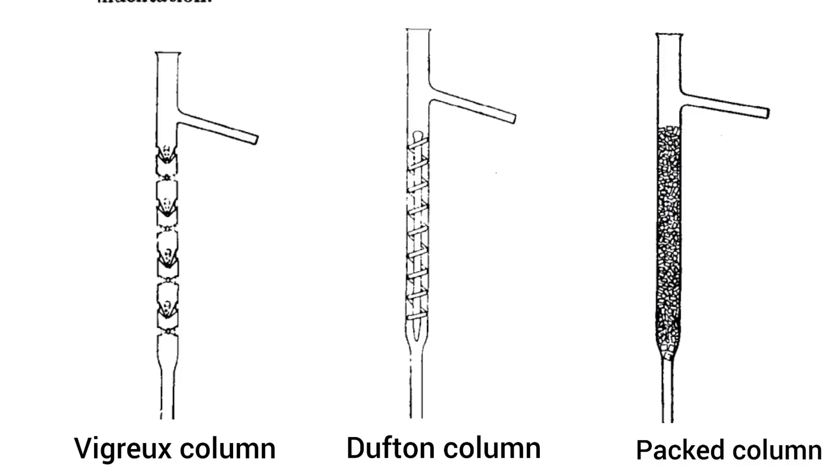Now these are three common types of fractionating columns. The one on the left is the Vigreux column which is least efficient among the three. The middle one is the Dufton column. It is designed in a way that the vapour has to travel through the spiral to reach the top, thus increasing the surface area of contact of vapour with refluxing liquid.